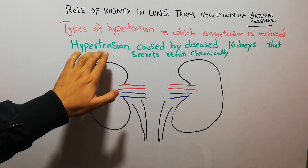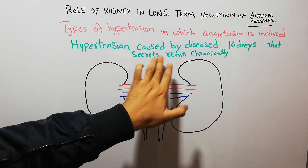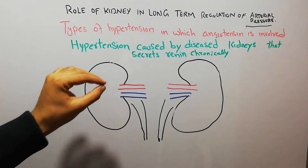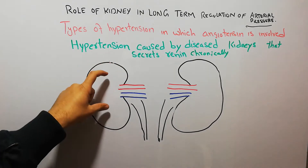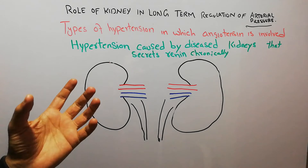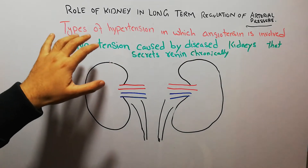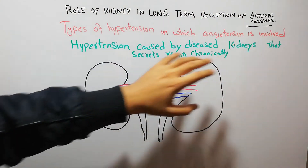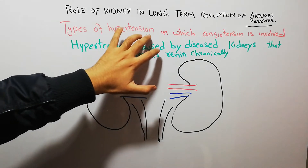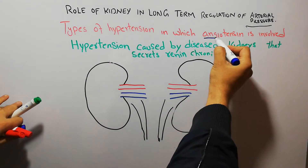Today we are going to discuss hypertension caused by diseased kidneys that secrete renin chronically. We are discussing the role of the kidney in control of arterial pressure and the types of hypertension in which angiotensin is involved.